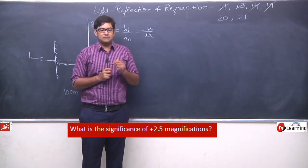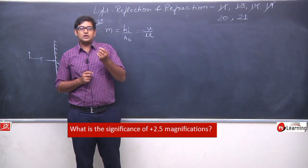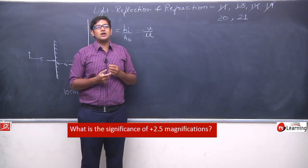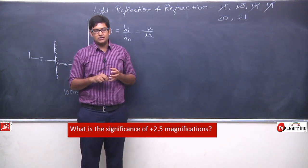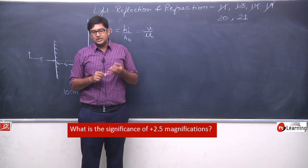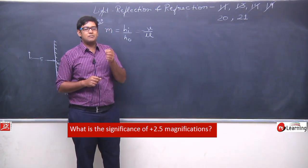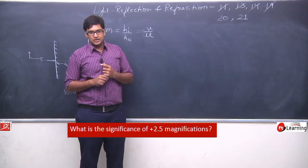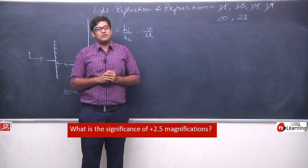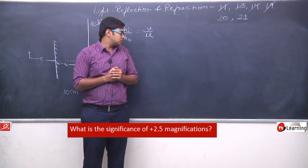Depending on the magnification, we can tell where the object is placed, where the image is forming, and the nature of the image and object. We need to find the significance of plus 2.5 magnification — what is the importance or meaning of a +2.5 magnification value.